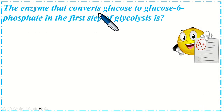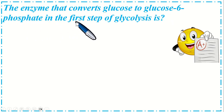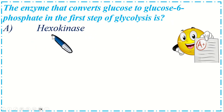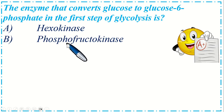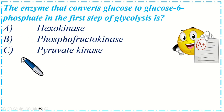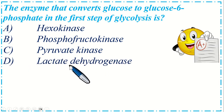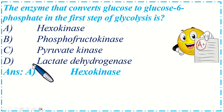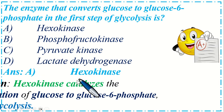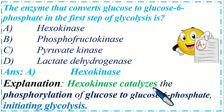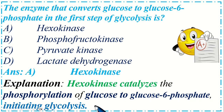The enzyme that converts glucose to glucose-6-phosphate in the first step of glycolysis is: Option A: Hexokinase, B: Phosphofructokinase, C: Pyruvate kinase, and Option D: Lactate dehydrogenase. The correct option is A, Hexokinase. Hexokinase catalyzes the phosphorylation of glucose to glucose-6-phosphate, initiating glycolysis.